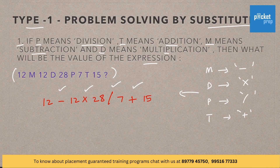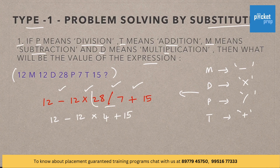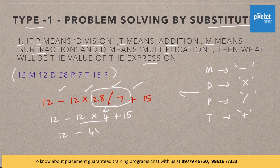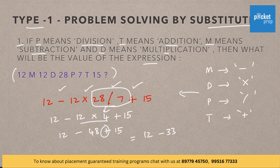According to BODMAS rule, we have to solve division first as there are no brackets here. So 12 minus 12 into 4 plus 15, because 28 by 7 is 4. Then comes the multiplication segment. Therefore, 12 minus 48 plus 15. After that comes the addition. Therefore, 12 minus 33, and finally the answer is minus 21.